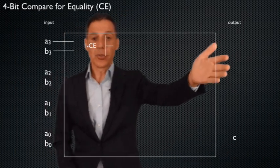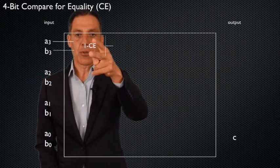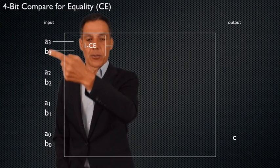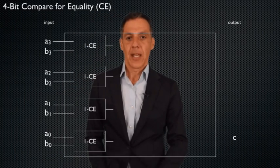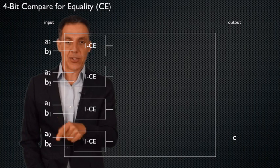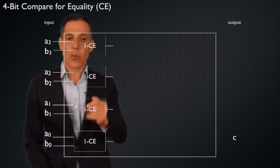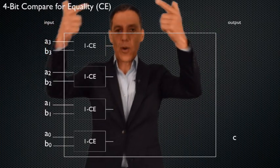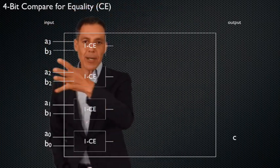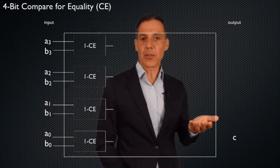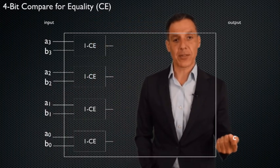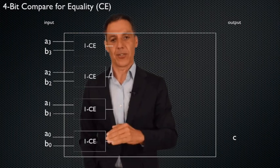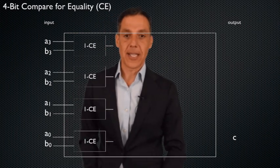Let's start pushing the bits through the compare for equality. A3 and B3 go through a one-bit compare for equality and out comes a one or a zero — one if those two bits are 00 or 11, zero otherwise. Similarly, A2 and B2, A1 and B1, and A0 and B0 each go through their own 1CE box. Notice the power of abstraction — I just write that little box. Now I have four outputs. The rule is: the output to the entire circuit should be one if all four of these are one. I know how to do ANDs — I just need AND gates. Since AND gates only take two inputs, I do them two at a time.